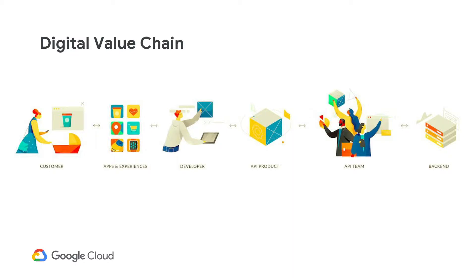The digital value chain helps identify your target audience. Most people can relate to the end customer who uses mobile apps to order coffee, purchase products, or track deliveries, and most people overlook the application developer as a target audience. Depending on where you reside on the digital value chain, your target audience will differ. Looking right to left, the target audience for the backend developer is the API team. The target audience for the API team is the developer who consumes the API product.